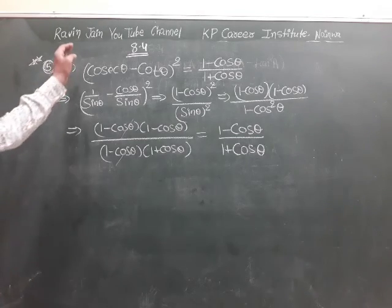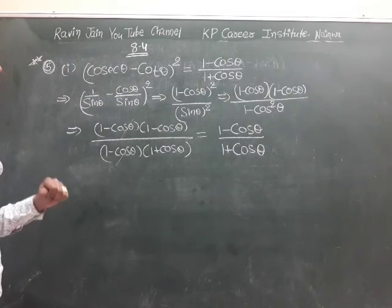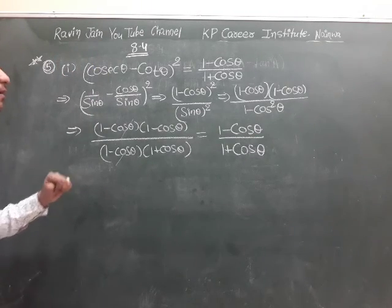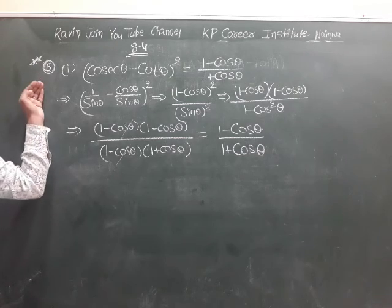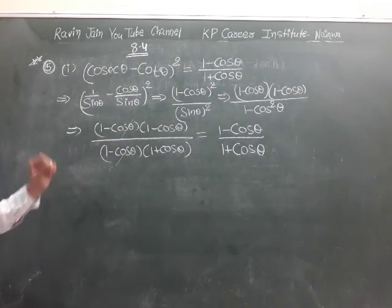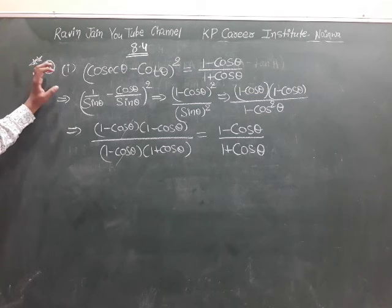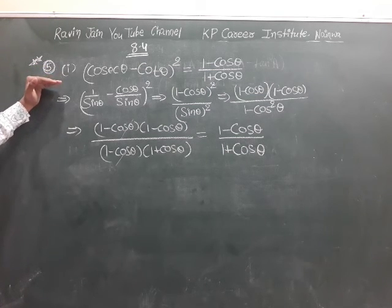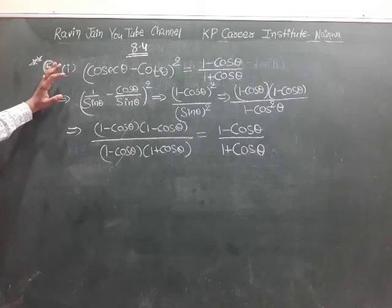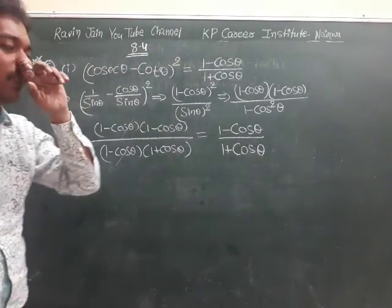Hello friends, welcome to Ravikyan YouTube channel. Let's start question number 5 of Exercise 8.4, Class 10 CBSE maths. This question contains 10 different parts. In each part, we need to prove that LHS is equal to RHS.